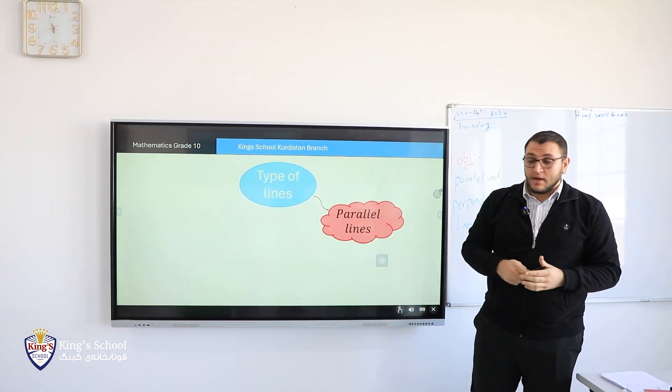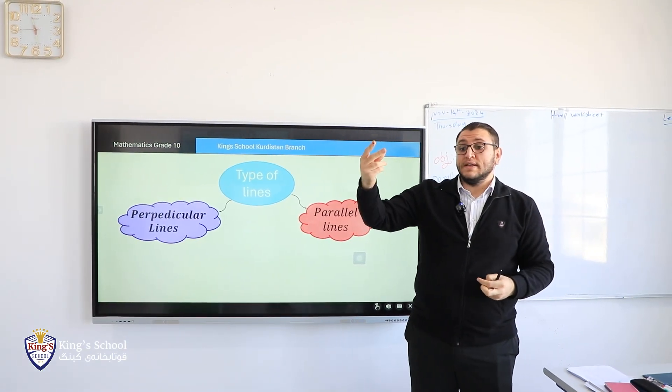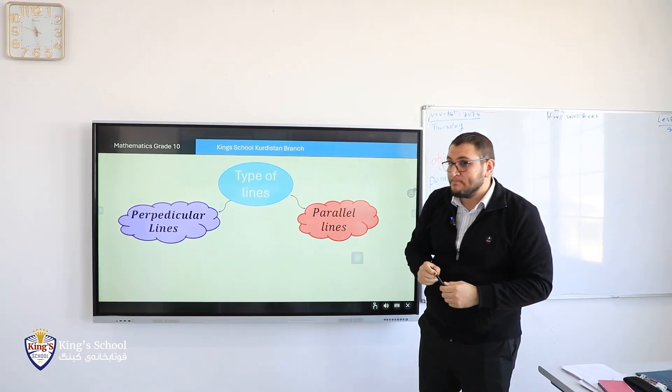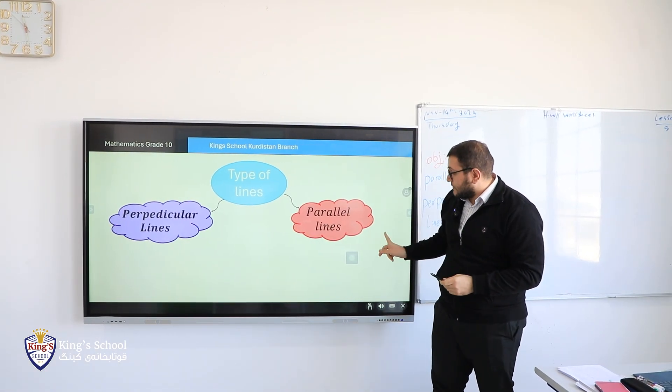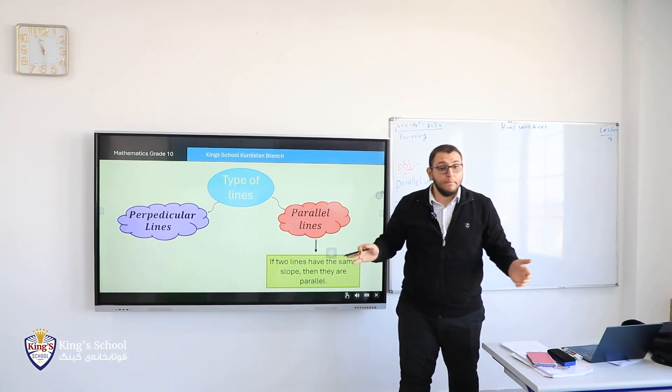Parallel lines, we have, and perpendicular. How I know two lines are parallel when we have equations? Roche? If two different lines have the same slope. If two lines, they have a same slope. Excellent. If two lines have the same slope, then they are parallel.